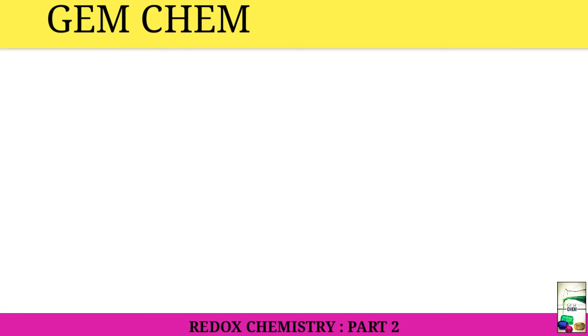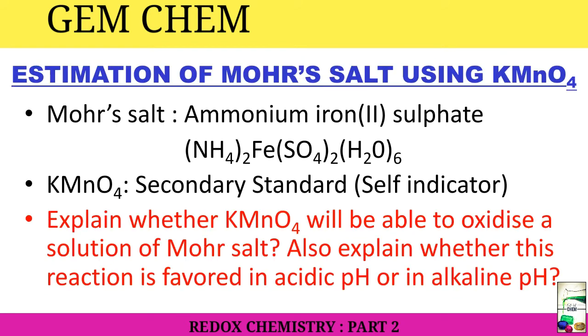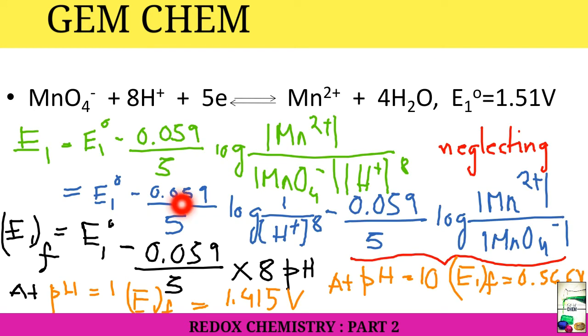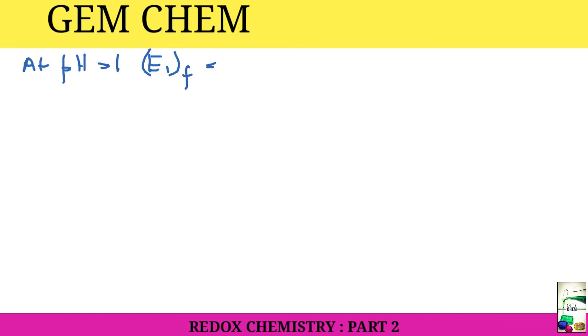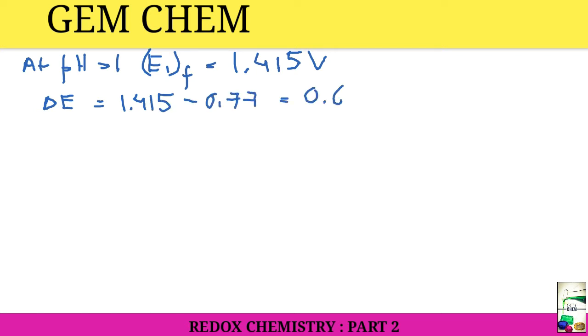Now we will go for pH action - at what pH it is favorable. At pH = 1, what will be the formal potential E₁^F? We have already seen in the previous slide that the formal potential at pH 1 is equal to 1.415 volt. So ΔE = 1.415 - 0.77 = 0.645 volt, and it is a positive value, so here ΔG is negative, so it is favored at pH = 1, that is acidic pH.